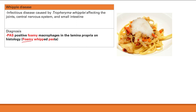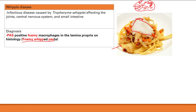A mnemonic: think 'foamy with pasta' — pasta for PAS-positive. The foamy macrophages occur because Tropheryma whipplei is an intracellular bacteria that proliferates within macrophages throughout affected tissues — joints, CNS, and small intestine. As it proliferates more and more within the macrophage, it creates that foamy appearance. The bacteria stains positive for PAS.